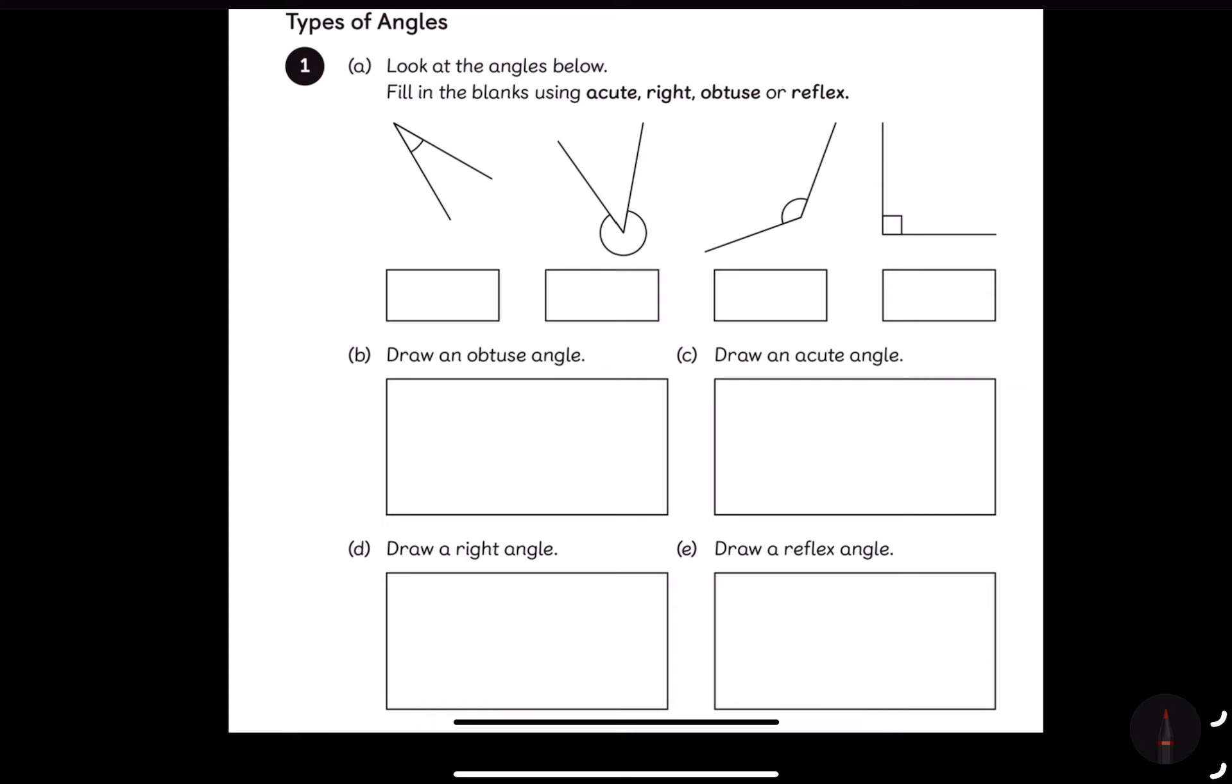First, the question says look at the angles below. Fill in the blanks using acute, right, obtuse, or reflex. A quick revision: acute is anything between 0 to 90 degrees. Right angle is exactly 90 degrees. Obtuse angle is between 90 degrees to 180 degrees, and reflex is between 180 to 360 degrees.